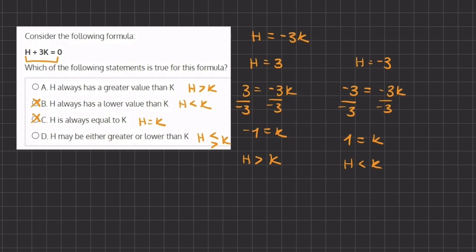Alright, so in this case, we can cancel out A and we are left with only D. Because D states that H may be either greater or lower than K, which is correct. Because when H equals 3, H is greater than K. When H equals negative 3, H is smaller than K. And therefore, D will be our final answer.